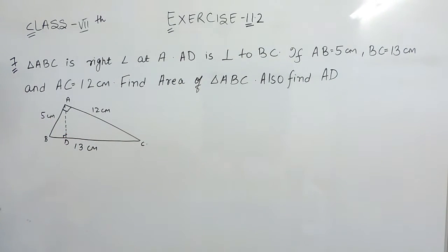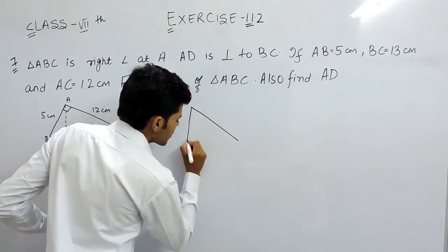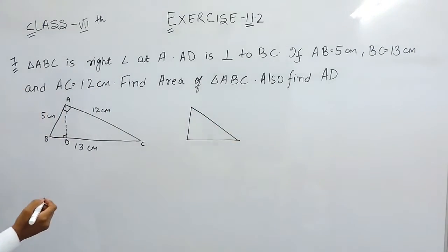AC is 12 cm and AB is 5 cm. Now if we rotate this triangle towards the left we will get this. We rotated this triangle.